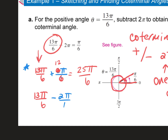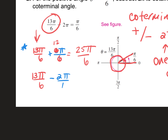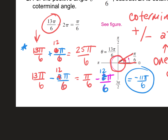We were at 13 pi over 6, added one whole circle, and we're back to the same spot with a different measurement. To subtract: common denominator is 6, so 2 pi becomes 12 pi over 6. What's 13 pi minus 12 pi? Pi over 6. If the question asks for one positive and one negative, and both answers are positive, subtract 2 pi again. That gives pi over 6 minus 12 pi over 6, which is negative 11 pi over 6 — that's the negative coterminal.